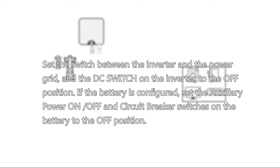Set the switch between the inverter and the power grid, and the DC switch on the inverter to the OFF position. If the battery is configured, set the auxiliary power ON/OFF and circuit breaker switches on the battery to the OFF position.